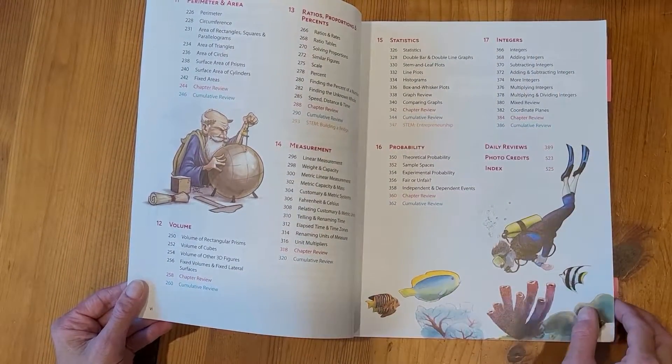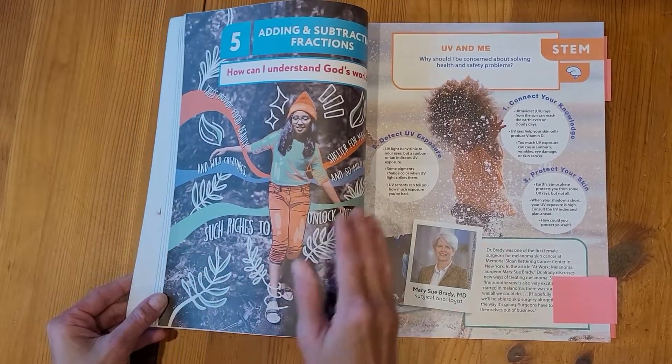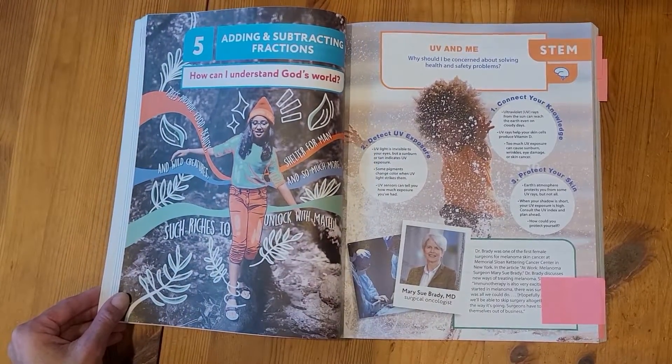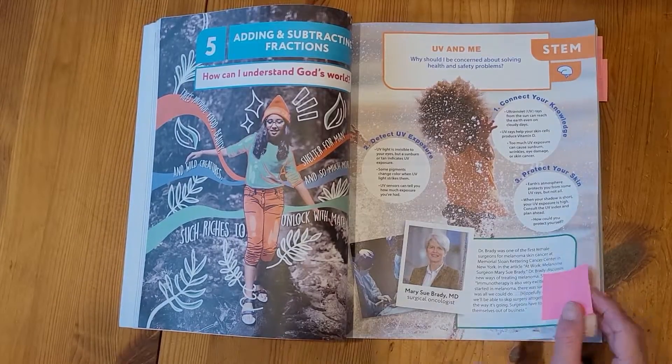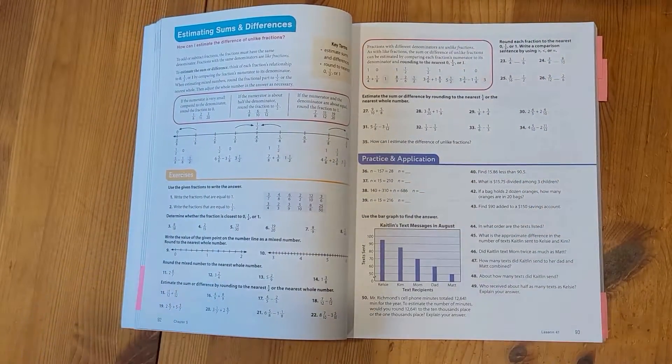And then we're going to jump ahead and we're going to look at chapter 5 because that's what we looked at in the Teacher Edition book. So this is what the student's book looks like. This is what they're seeing as you're going through the lesson.